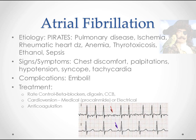The main complication of AFib is emboli. Turbulent, low-flow in the atria creates clots — right atrial clots can cause a PE, left atrial clots can cause a stroke. That's the main reason we worry about it and treat it, especially with anticoagulation. Most AFib patients will be on anticoagulation, and we also use beta blockers, digoxin, and calcium channel blockers for rate control.